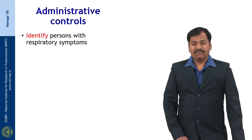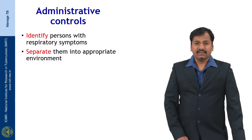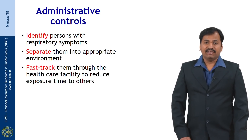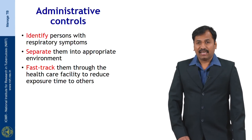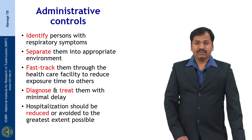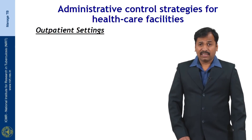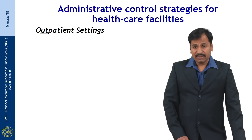Administrative controls begin with identifying persons with respiratory symptoms and separating them into an appropriate environment. They should be fast-tracked through the healthcare facility to reduce exposure time to others, diagnosed and treated with minimal delay, and hospitalization should be reduced or avoided to the greatest extent possible. Administrative control strategies differ for outpatient settings versus inpatient settings.